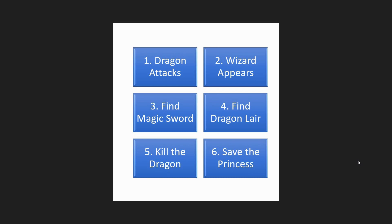We have a dragon attack and then a wizard appears. For some reason a dragon attacks, and right after that a wizard appears. The protagonist finds out — maybe from the wizard — that a magic sword needs to be found. We've got a magical item that needs to be found: a hero quest type of setup. The protagonist has to find the dragon's lair — maybe the magic sword is in the dragon's lair. Then kill the dragon, which of course is a classic story trope, and save the princess. That's just our basic plot structure, pretty straightforward, going from point A to point B.